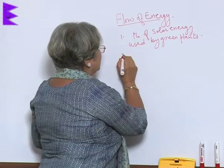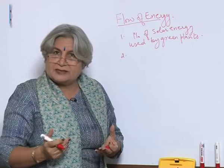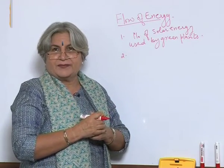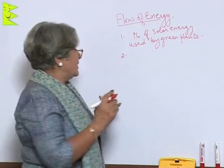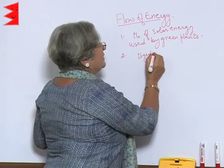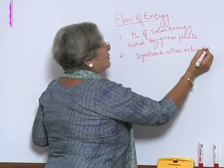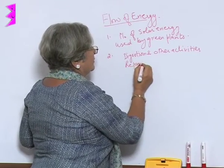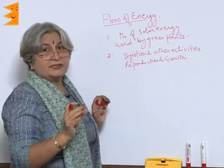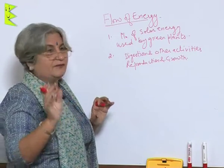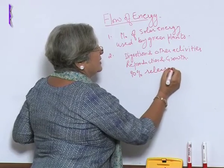Once solar energy has reached the green plants, it makes food and becomes a part of the plant. But plants are eaten by animals, and plants also need a lot of energy. Some of it is used for digestion and other activities, some for reproduction and growth, and a lot of it is wasted — released to the environment. Almost 90% is released or used.